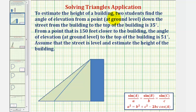To estimate the height of a building, two students find the angle of elevation from a point down the street from the building to the top of the building is 35 degrees. From a point that is 150 feet closer to the building, the angle of elevation to the top of the building is 51 degrees. Assume that the street is level and estimate the height of the building.